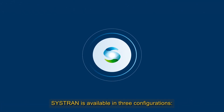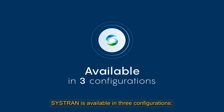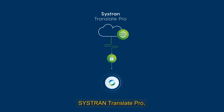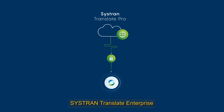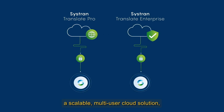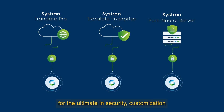SysTran is available in three configurations based on your security requirements: SysTran Translate Pro, a single-user public cloud solution; SysTran Translate Enterprise, a scalable multi-user cloud solution; or SysTran Pure Neural Server, for the ultimate in security, customization, and unlimited volume.